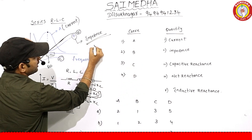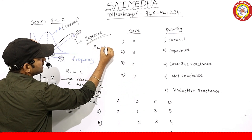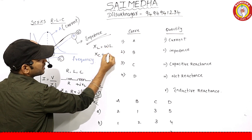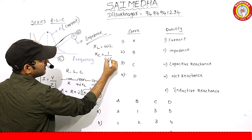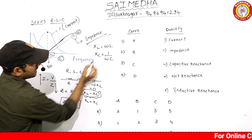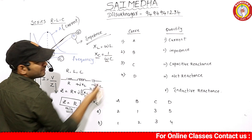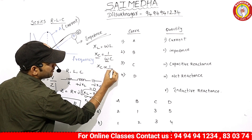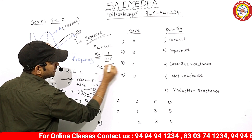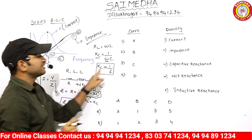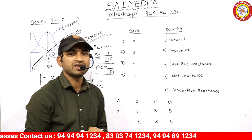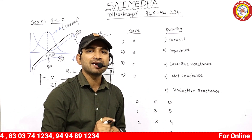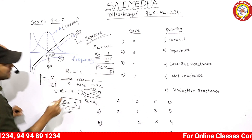XL equals omega L. XC equals 1 by omega C. XC — capacitive reactance — has an inverse relation with frequency: XC is inversely proportional to frequency. Because of this, the waveform shows a rectangular hyperbola formation.